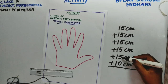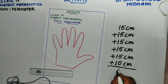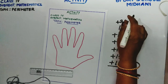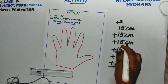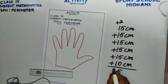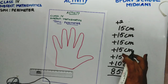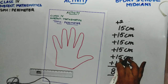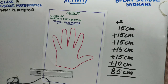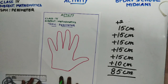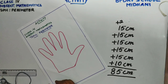Now let us add all of these together: 15, 30, 45, 60, 75 — plus 10 — that is 85 centimeters. So the length of the boundary of the closed irregular figure is 85 centimeters. Therefore, this is a closed irregular figure.